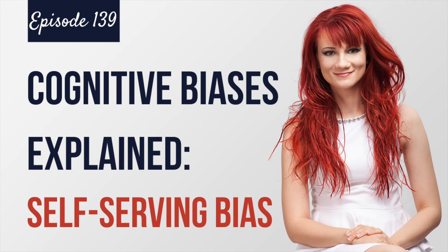Many people wonder why this cognitive bias happens in the first place. During the 1960s, psychologist Fritz Heider found that people tend to make attributions based on their need to maintain a higher level of self-esteem. When you attribute positive events to your own character and negative events to external factors, you're essentially protecting your self-esteem and trying to escape taking responsibility for your mistakes and shortcomings.